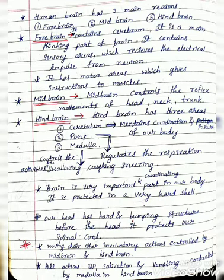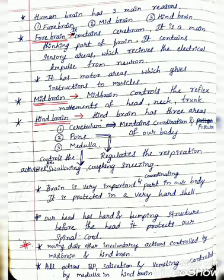The second part is the midbrain. The midbrain controls the reflex movements of the head, neck, and trunk. The third part is the hindbrain, which has three areas. First is the cerebellum, which maintains the coordination and posture of our body. Second is pons, which regulates respiration. Third is the medulla, which controls activities like swallowing, coughing, and sneezing.